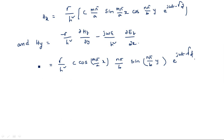These are the four field component equations obtained for TE waves. In the earlier video on general wave propagation in rectangular waveguide we obtained these four equations — Ex, Ey, Hx, Hy — and for TEM wave propagation we also calculated these four. Now for TE waves we have similarly calculated Ex, Ey, Hx, and Hy. In this way, the wave equations are obtained for TE and TEM waves. Thank you.